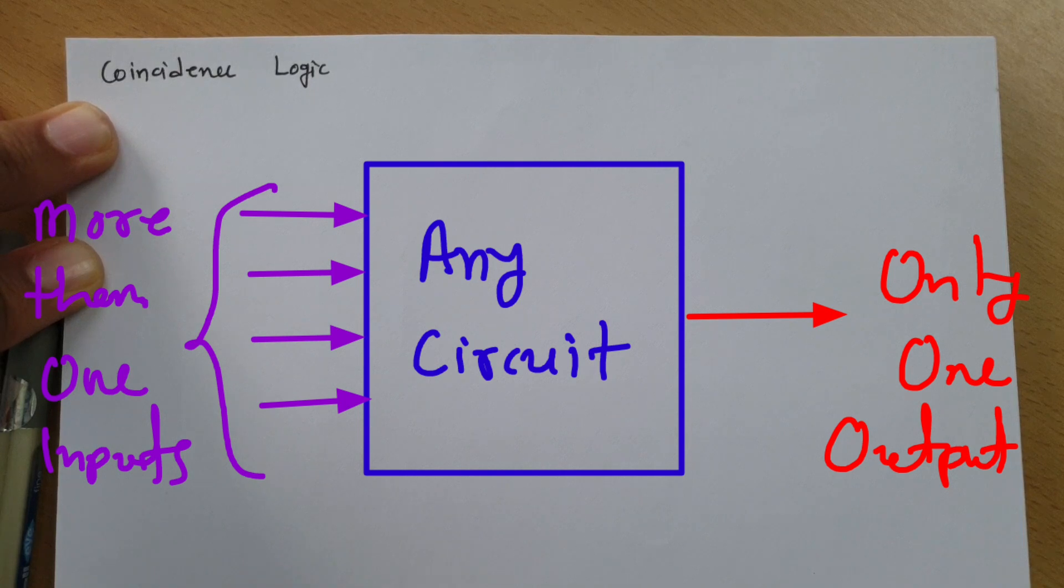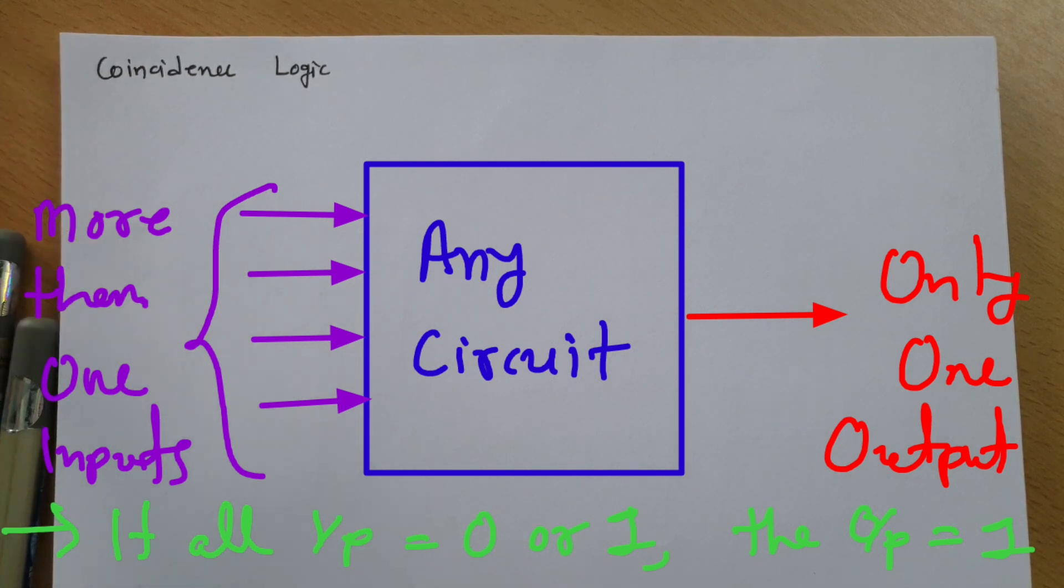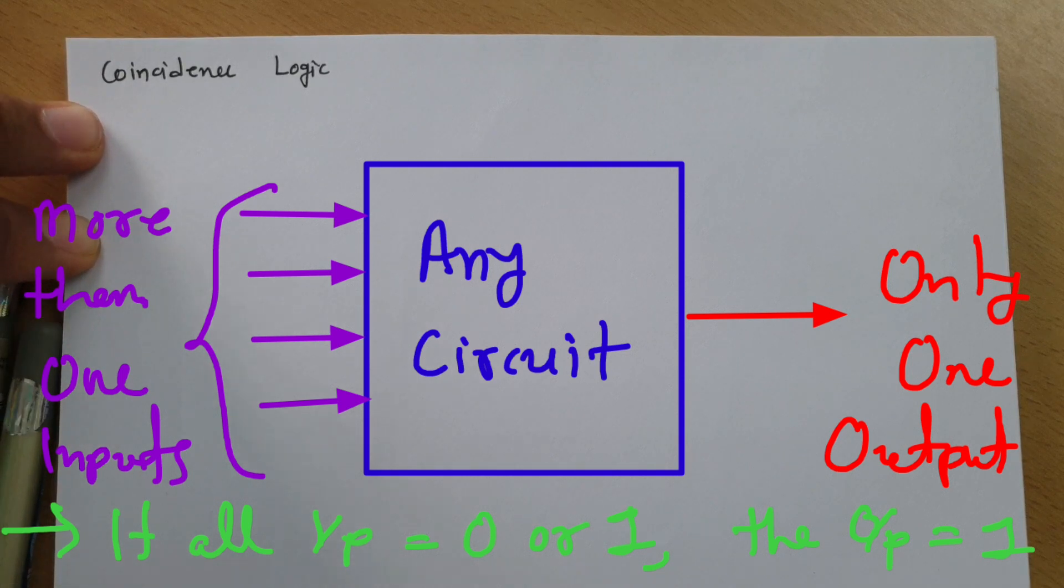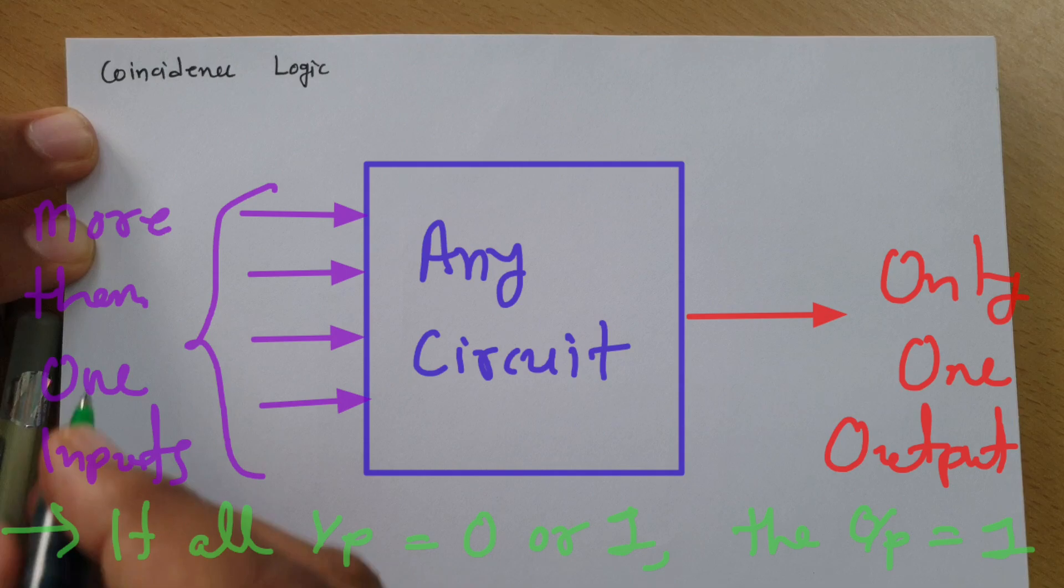Second condition: if you give all inputs as zero, then output is one. And if you give all inputs as one, the output is also one. This is the basic concept of coincidence logic. Let me write this step by step so it will be more clear to all of you.